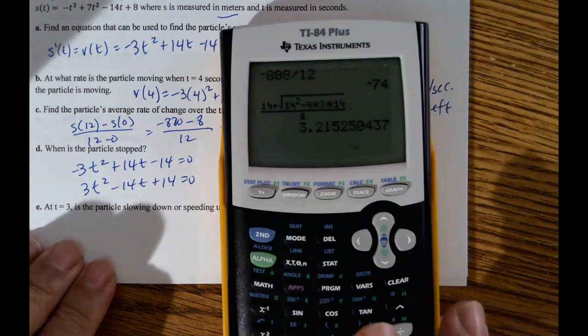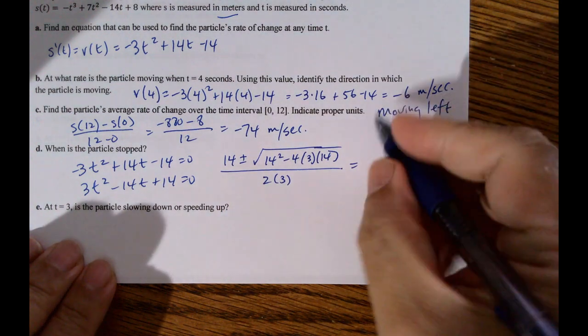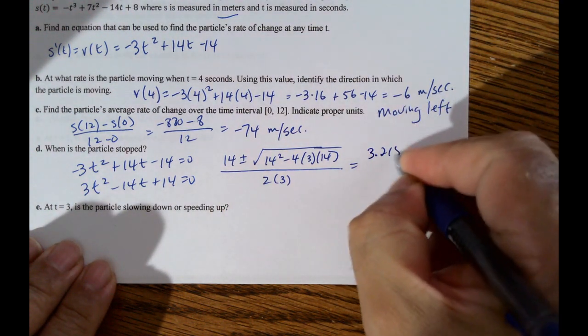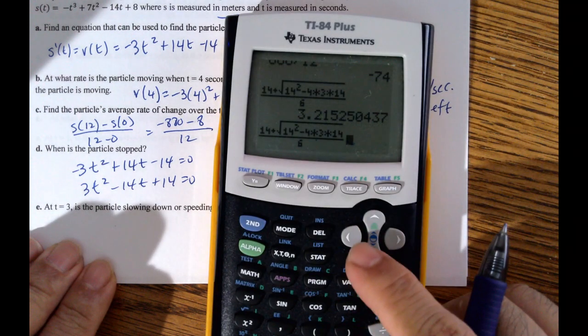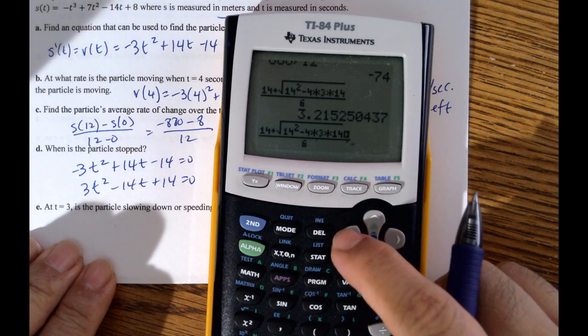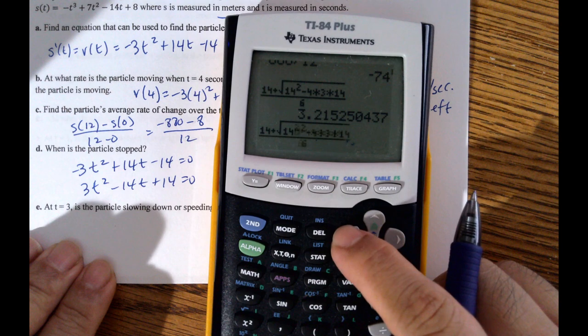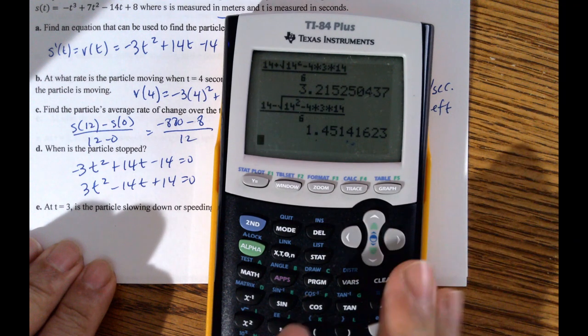So that gives me one answer, 3.215. 3.215. Go back and edit that. And change the plus to a minus in there. And we got 1.451.